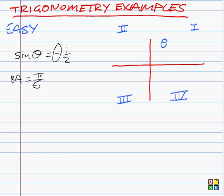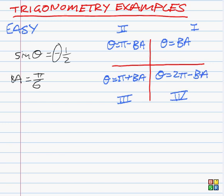In quadrant one, the solution is always just the basic angle. In quadrant two, the solution is always pi minus the basic angle, and we're working in radians in all of these questions. In quadrant three, the solution is pi plus the basic angle, and in quadrant four, it's two pi minus the basic angle. I suggest that you memorize that because it's a very helpful table.